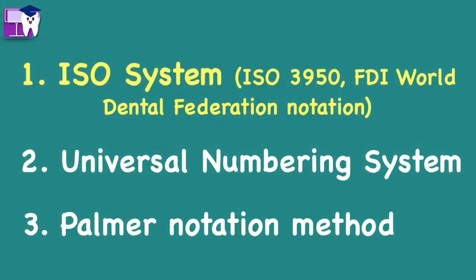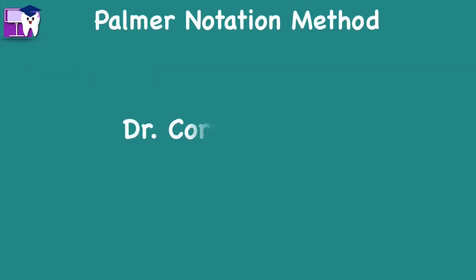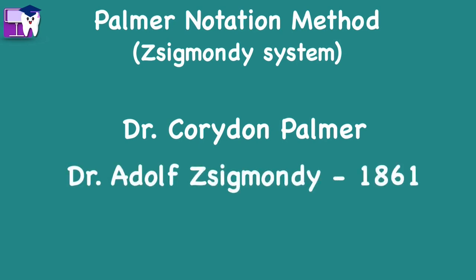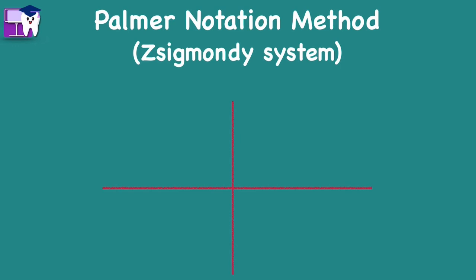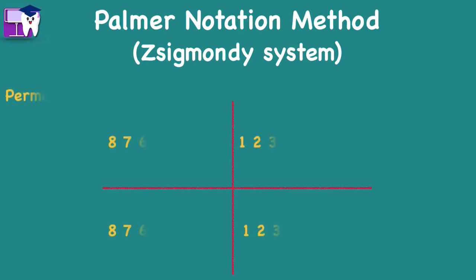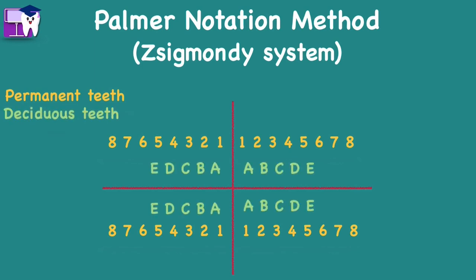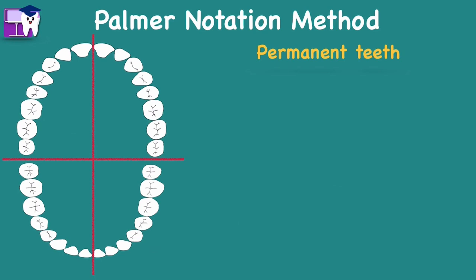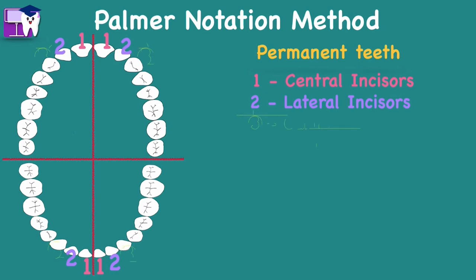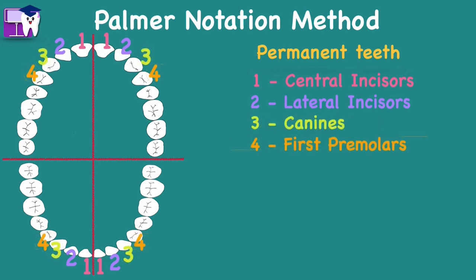We are done with the ISO system and Universal Numbering System; now we go to the last method, the Palmer Notation Method. Palmer notation was named after Dr. Cordon Palmer, an Ohio dentist. It was originally named the Sigmundy system after Dr. Adolf Sigmundy developed this idea in 1861. Palmer notation consists of a symbol mapping which quadrant the tooth is located in, and a number telling the position from the midline. Permanent teeth are numbered from 1 to 8, while deciduous teeth use letters A to E. The numbers are: 1 central incisors, 2 lateral incisors, 3 canines, 4 first premolars.